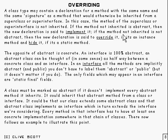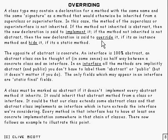Now if the method that you haven't inherited is not abstract, then there are two cases to consider. If that method not inherited is an instance method, then the new declaration is said to override it. And if it's a static method, then the new declaration is said to hide it. These two things — hide and override — result in different behaviour.